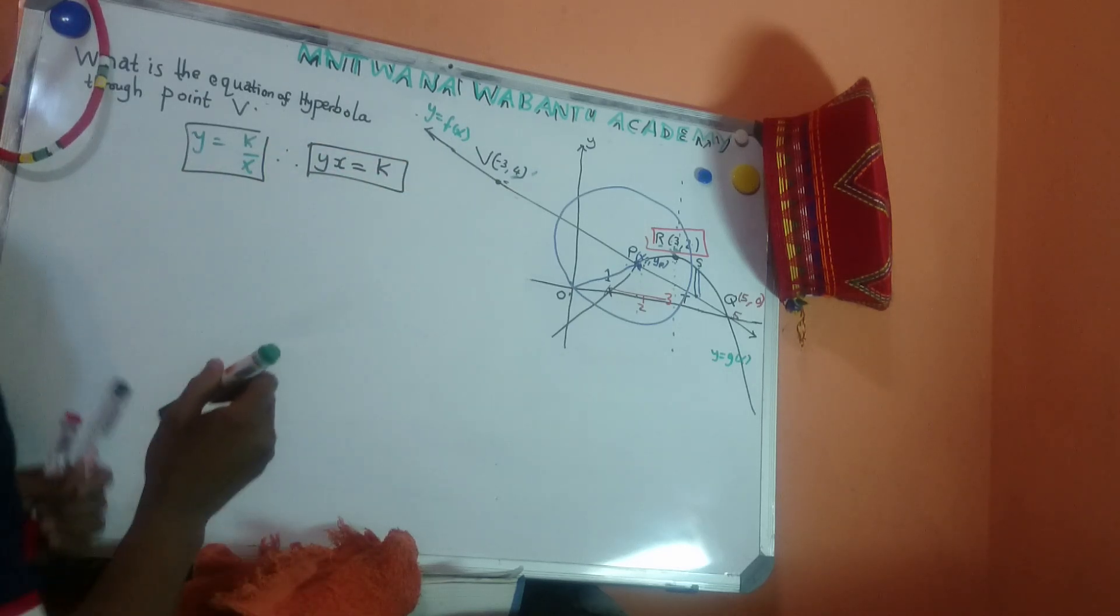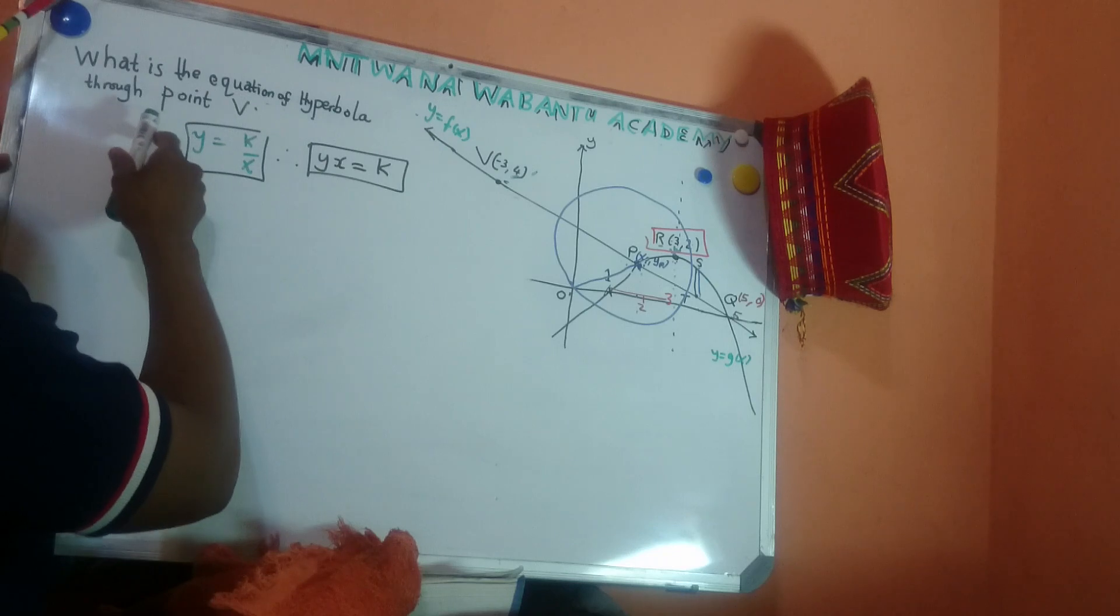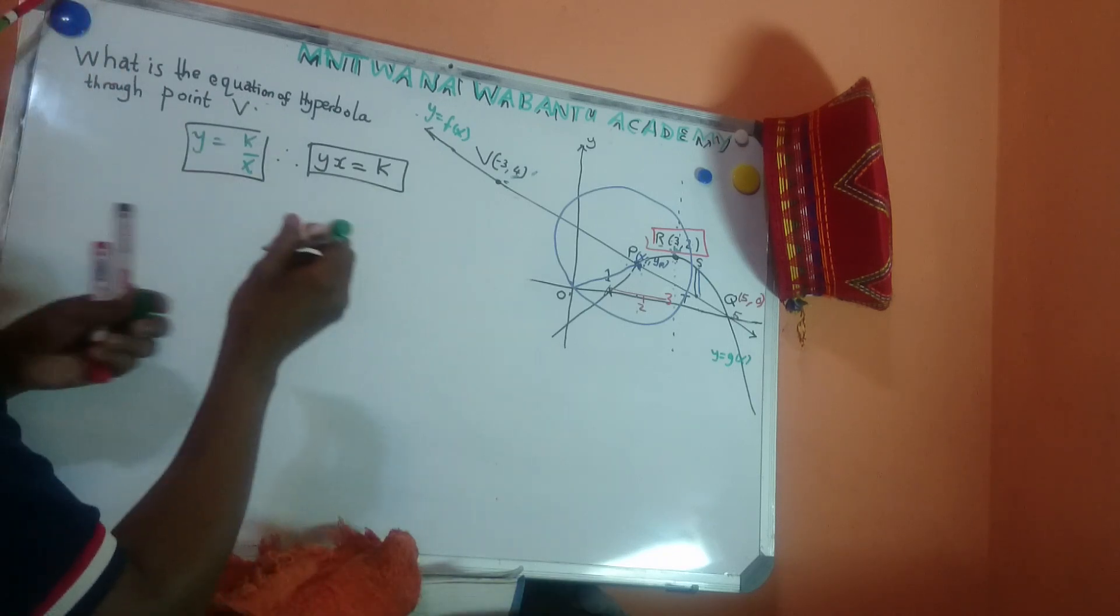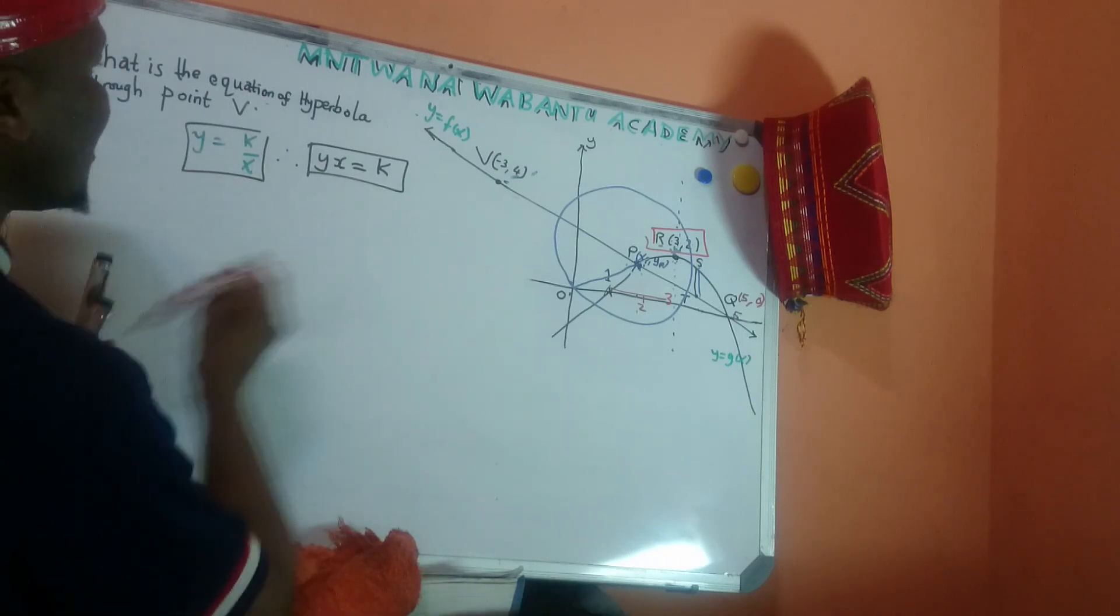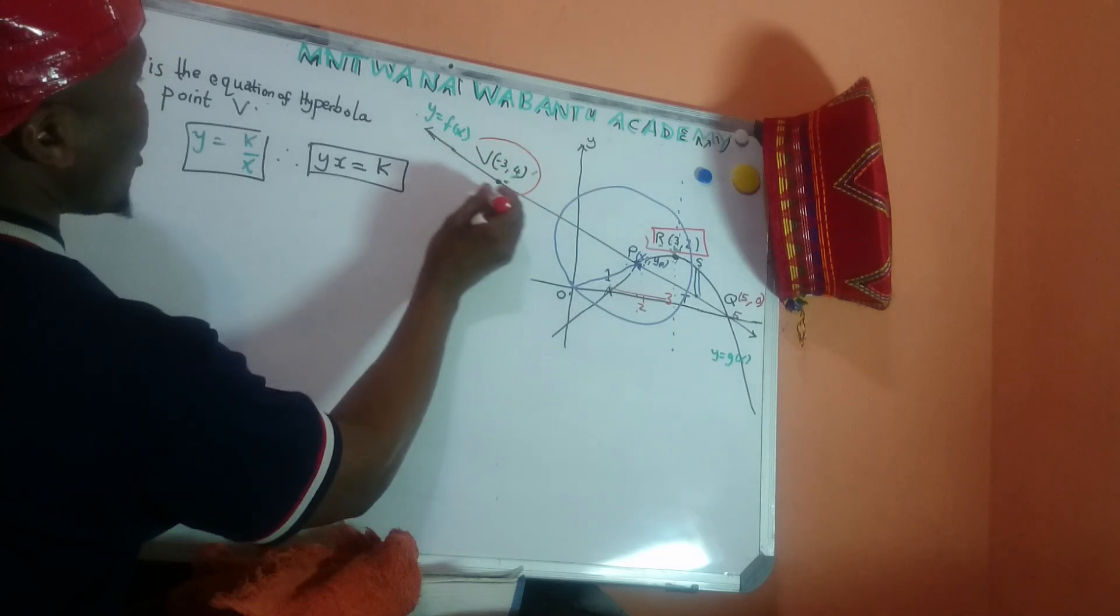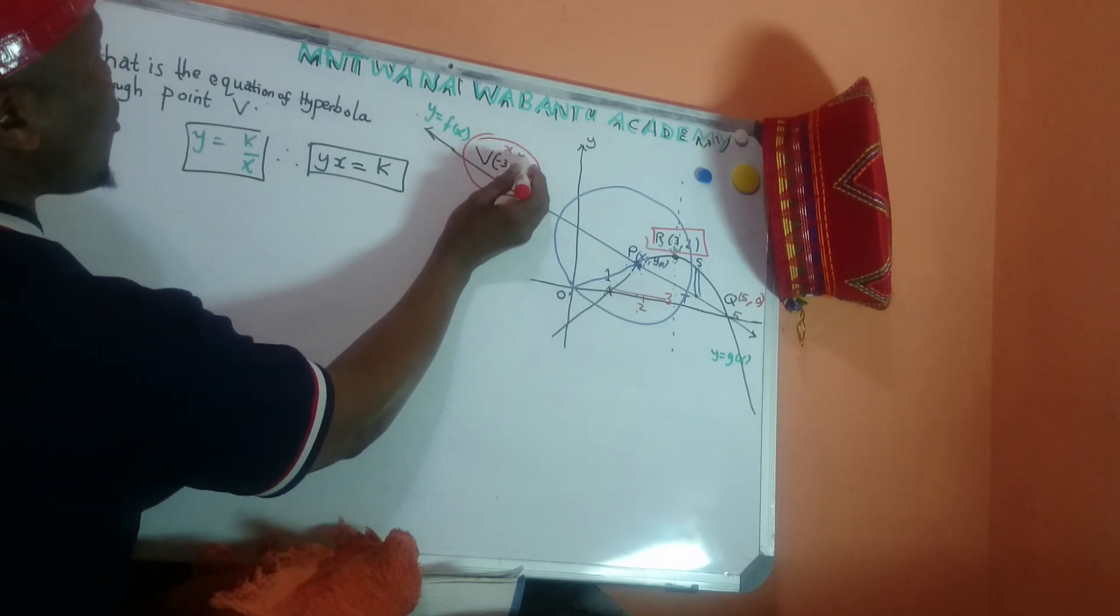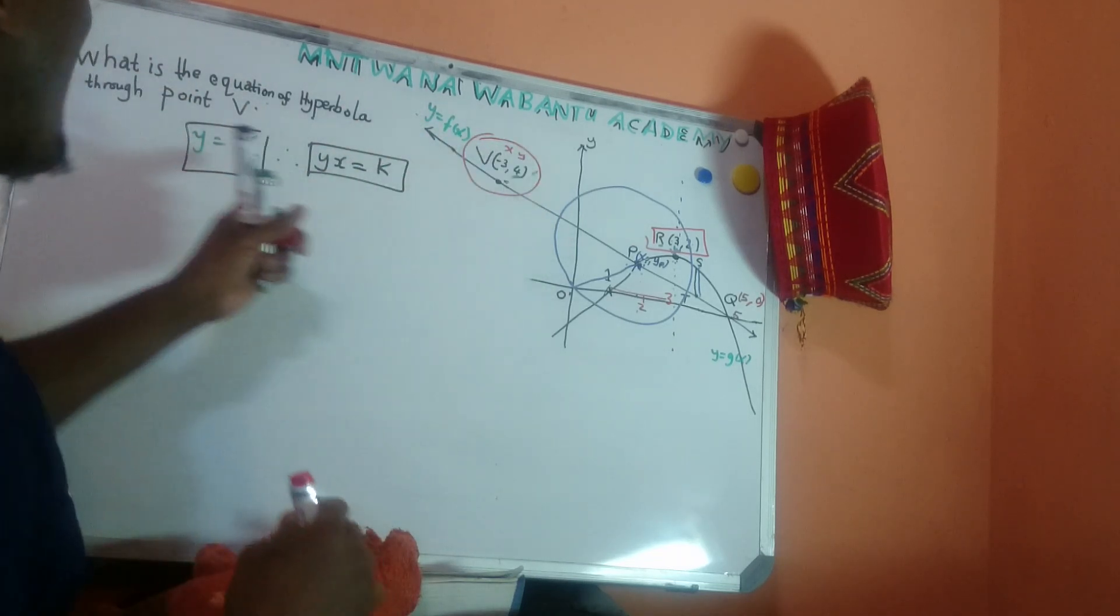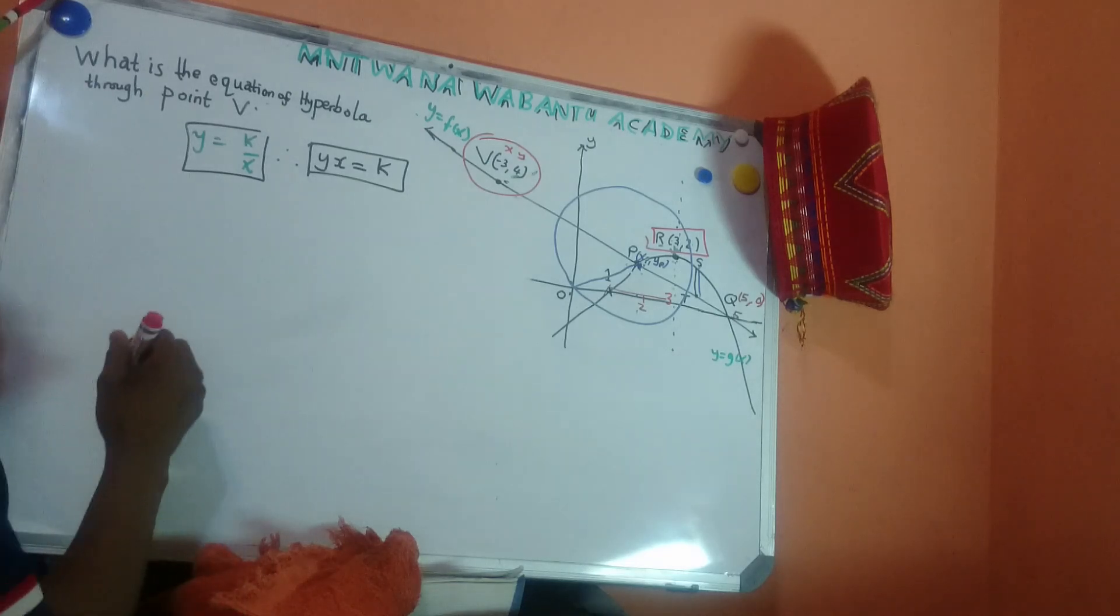So, okay. So, let's say, equation of hyperbola through point B. What is B? This is B here, right here, man. Look. This is B here. So, we have a coordinate of x and y. So, we can substitute x and y into the equation. See what I'm saying?